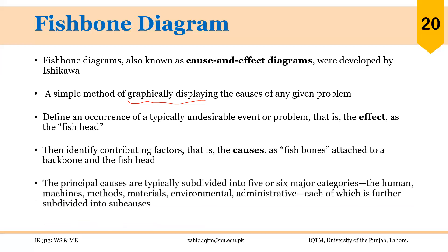The principal causes are typically subdivided into five or six major categories: human, machines, methods, material, environment, and administrative — each of which is further divided into sub-causes.